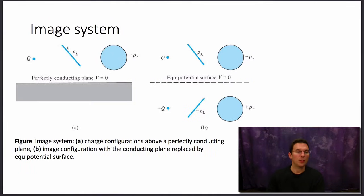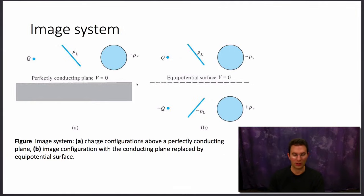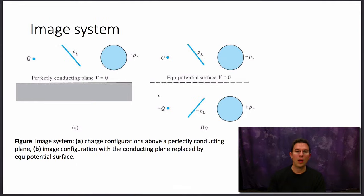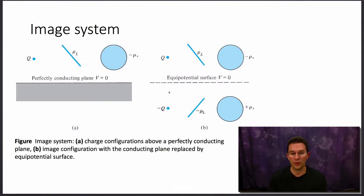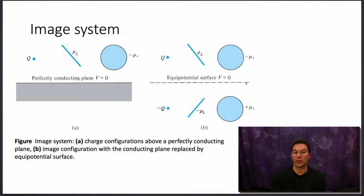Going back to the original system, if we didn't use image theory, we still have the boundary condition that the tangential component of the electric field all along the surface of the conductor must be equal to zero. That's equivalent to saying the potential at that point is equal to zero. So when we replace our conductor with the images, we must do so such that the tangential component of the electric field still vanishes along the line where the surface of the conductor used to be.